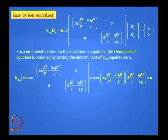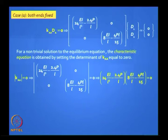If you make the determinant equal to zero, you get the characteristic equation. For a 2×2 matrix, you have two solutions — they are called eigenvalues. We are really interested in the lower of the two, because buckling will take place at the lower load. You solve that equation, pick up the lower eigenvalue, and you have your answer.